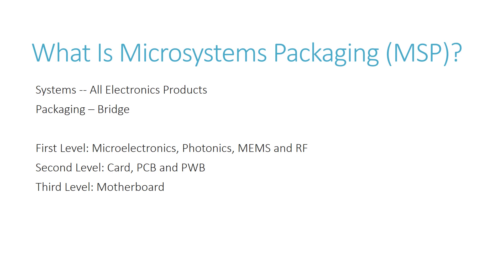The second level packaging is about cards, PCBs, and PWBs. PCB is printed circuit board and PWB is printed wiring board. The third level packaging involves interconnection of all these components to be assembled on the system-level board. The system-level board, also called motherboard, not only carries these components on top and below but also interconnects every component to form one interconnected system.